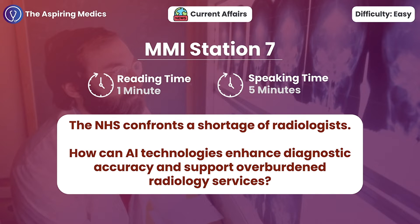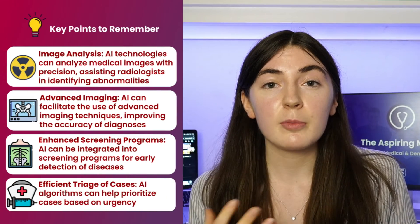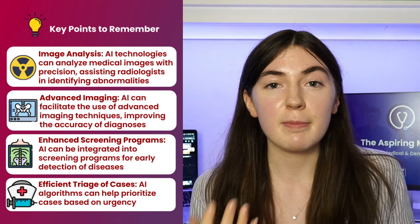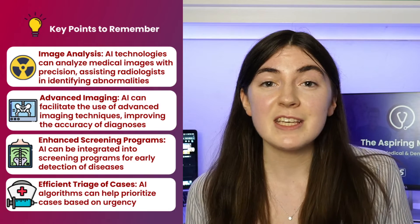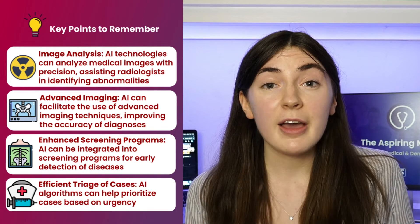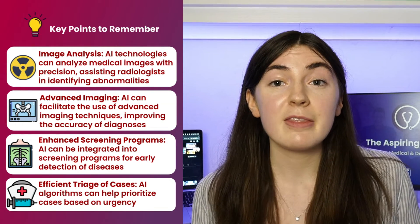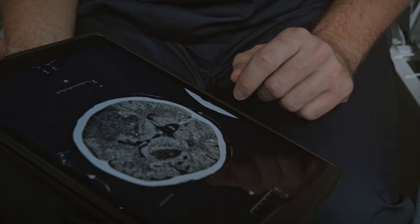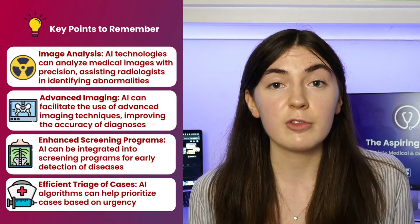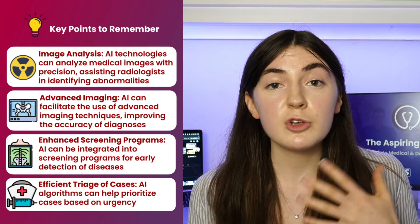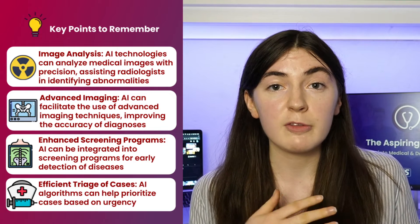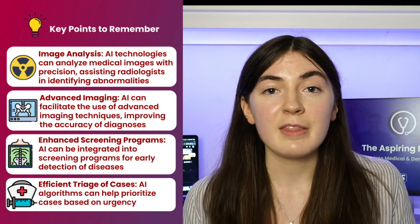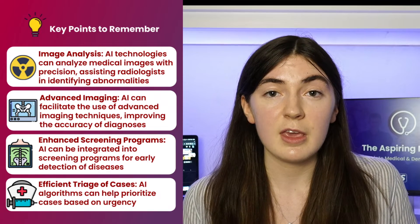The NHS confronts a shortage of radiologists — how can AI technologies enhance diagnostic accuracy and support overburdened radiology services? Thinking about AI in the context of radiology, AI neural networks can process and look at large quantities of data to find trends and patterns, which is particularly important in diagnostic scans such as CT scans, PET scans, and ultrasounds. AI can be used to detect gross abnormalities, and scans can then be further reviewed by a radiologist for smaller details. This increases efficiency, reduces workload on radiologists, leading to better work-life balance and greater NHS capacity.